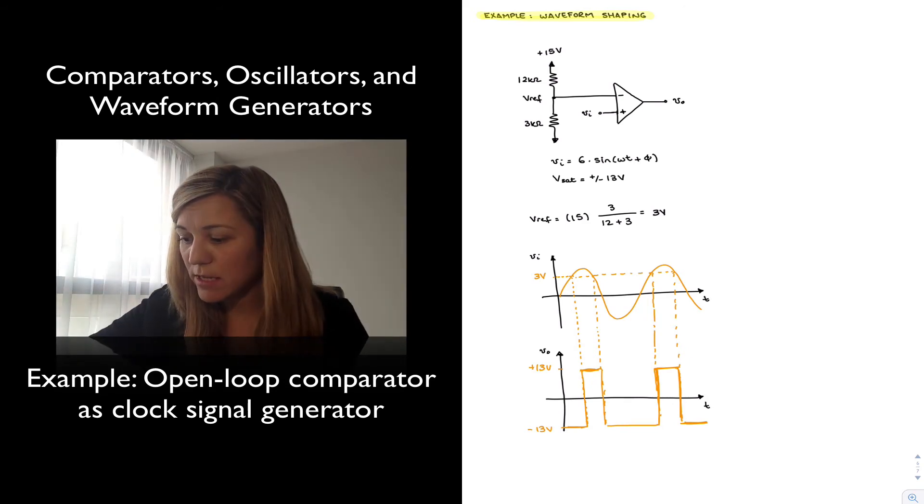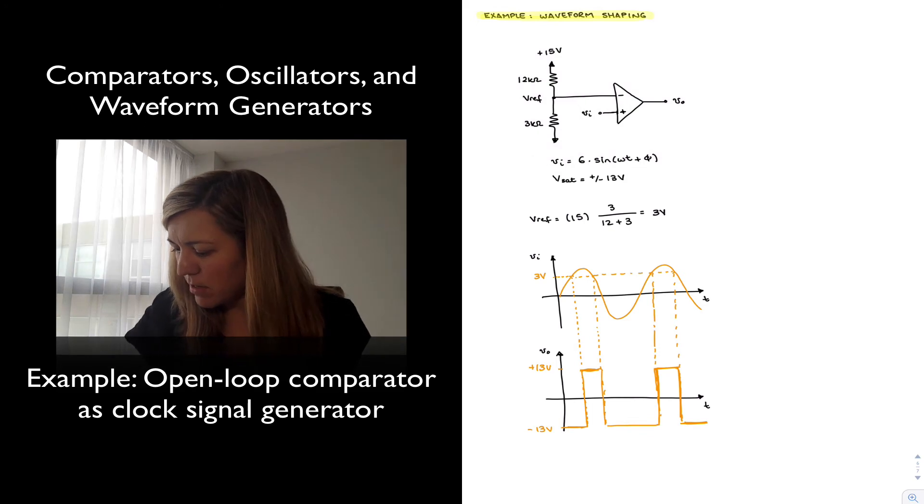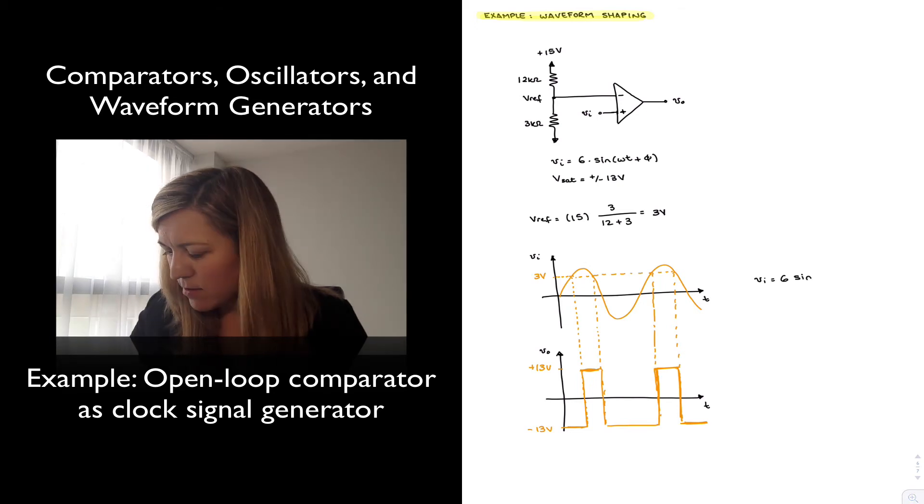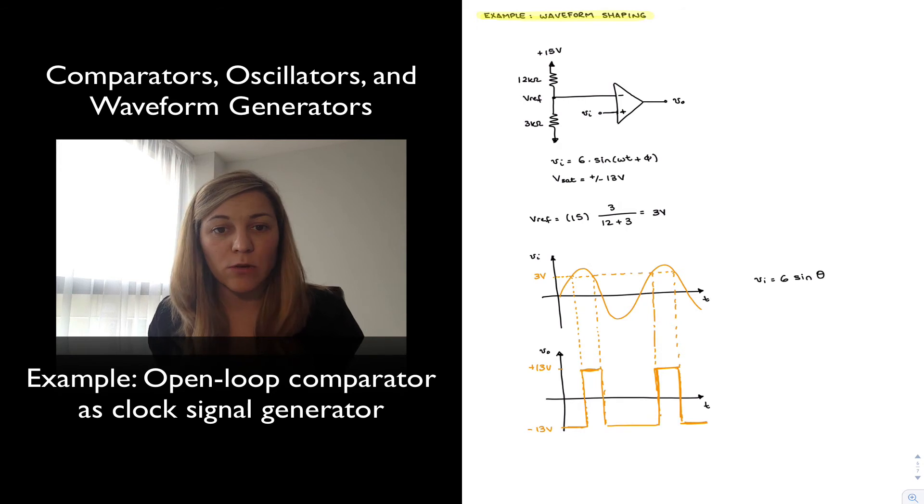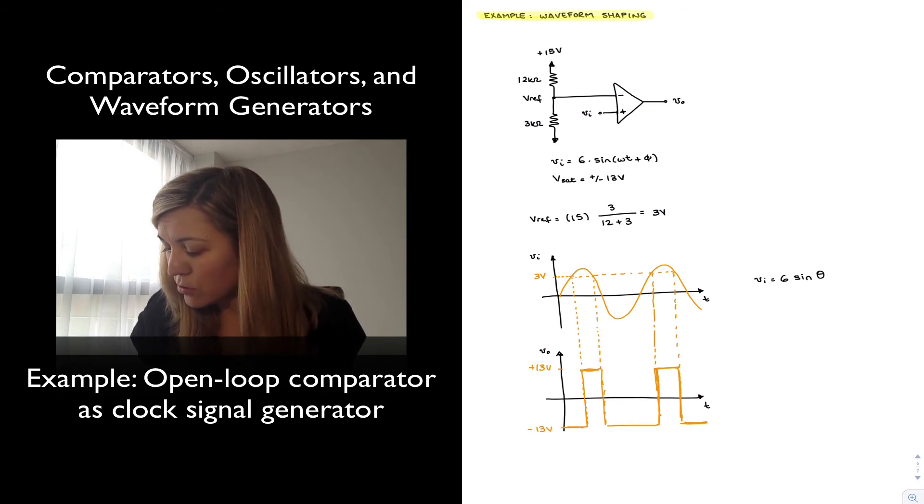Notice that I can adjust the duty cycle of that output signal by simply changing the reference voltage. In this case, if I wanted to calculate my duty cycle, I'll say my v_in is equal to 6 times the sine of omega t plus theta. We know that my output is high whenever v_in is equal to 3 volts, so v_out is high when this equals 3.